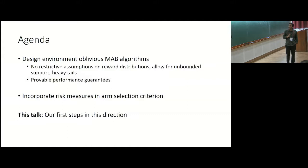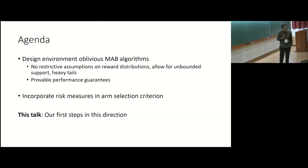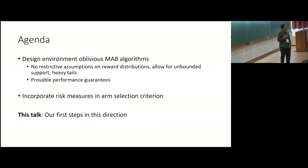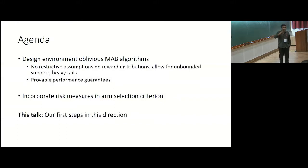So our agenda is twofold: we want to design environment-oblivious algorithms for the multi-armed bandit problem — algorithms with very little prior information about the space of reward distributions — with provable performance guarantees, while also incorporating risk measures in the criteria for arm selection. What I am going to present in this talk is some of the first steps we have taken in this direction.